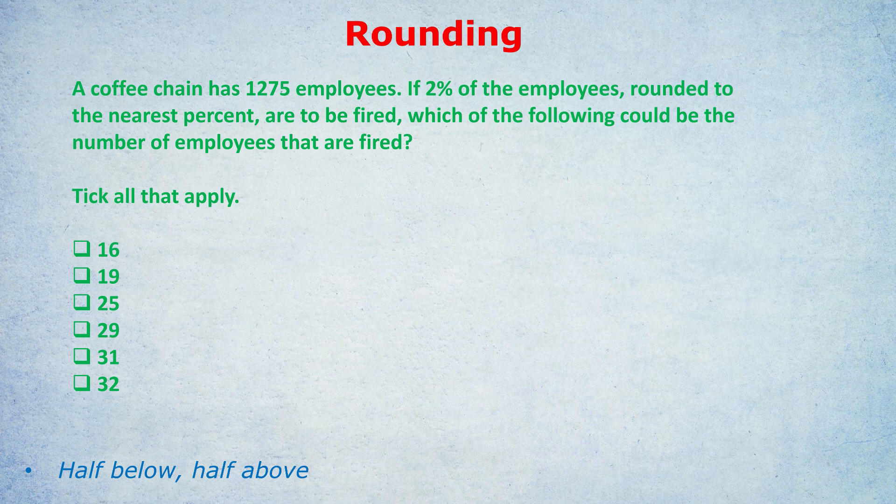This 2% figure is a rounded figure. That means this might not be the exact number — they've just rounded it. I want you to think of two things: what's the least possible percentage that could have actually been fired, and what's the highest possible percentage that could have actually been fired?